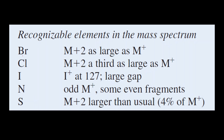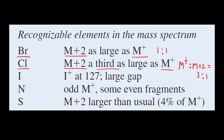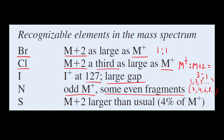Here is a summary of how to identify each heteroatom: For bromine, M+2 is as large as the M+ peak (1:1 ratio). For chlorine, M+2 is one-third as large as M+ (3:1 ratio). For iodine, there is a peak at m/z = 127 and a large gap before the molecular ion peak. For nitrogen, the M+ ion is odd and some even-numbered fragments are present. For sulfur, the M+2 ion is 25 times smaller than M+ (25:1 ratio).